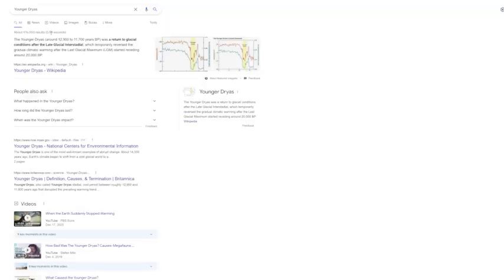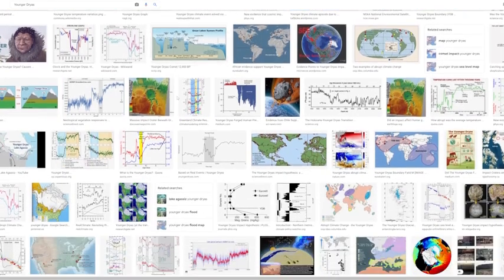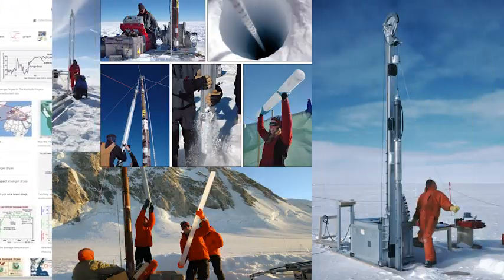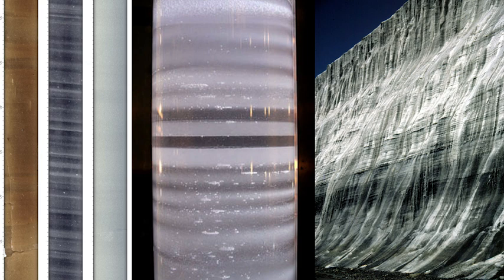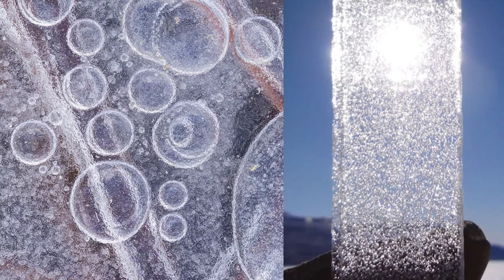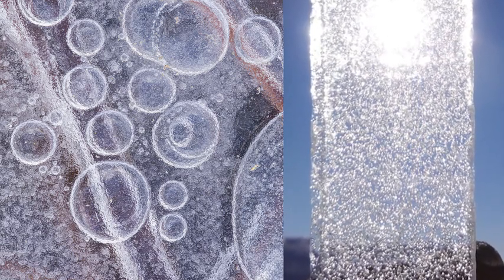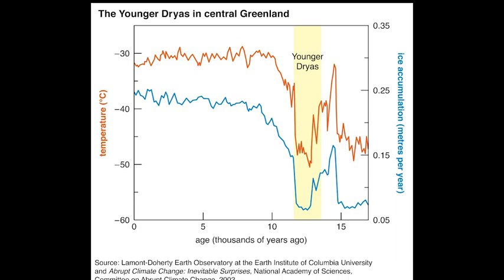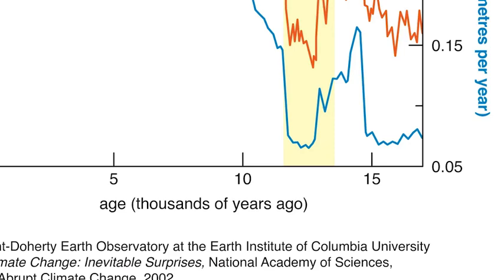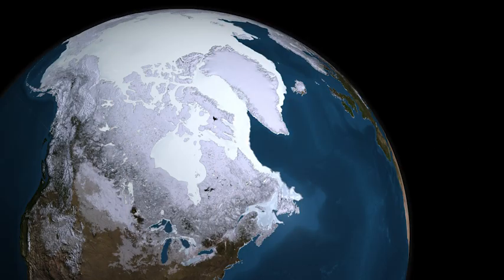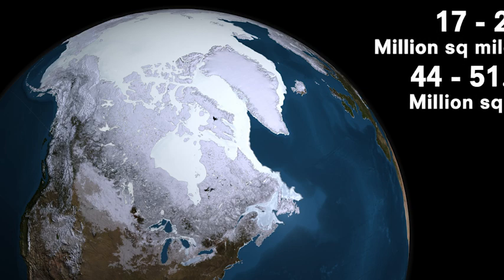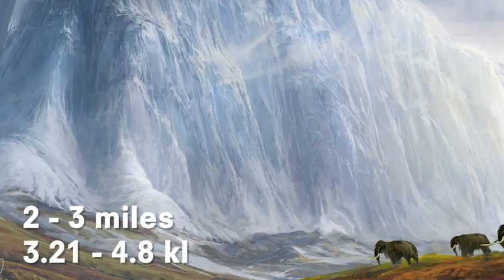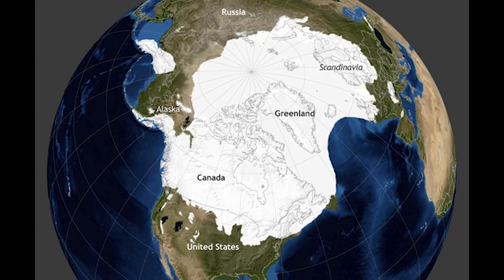Look up 'Younger Dryas' — D-R-Y-A-S — and you're going to find a bunch of graphs. This is temperature data collected from Greenland and the Antarctic, where they drill ice cores into the glacier to ancient ice deposited thousands of years ago. They measure the oxygen isotopes and trapped bubbles in the ice to know what temperatures were a really long time ago. Pick the first graph you see and find where it says Younger Dryas — the '15' at the bottom right represents 15,000 years ago.